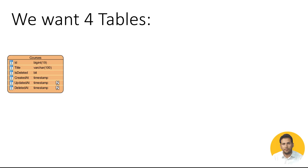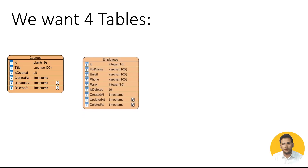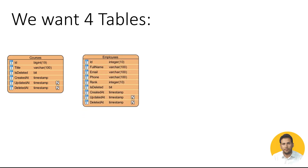We also want to have another table named employees. In that we again have id, and then we have some strings like full_name, email, phone, rank which is integer, and the other four properties: is_deleted, created_at, updated_at, and deleted_at.